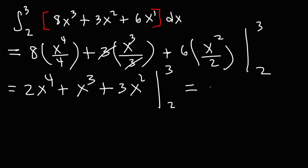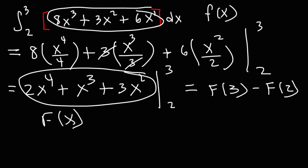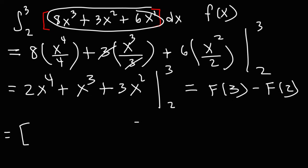Now this is going to equal F of 3 minus F of 2. And keep in mind this expression here represents lowercase f of x. And this expression is the antiderivative which represents capital F of x. So we're going to plug in 3 and 2 into capital F of x. So in these brackets we're going to put F of 3. And here this is going to be F of 2.